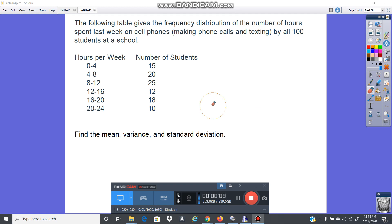The following table gives the frequency distribution of the number of hours spent last week on cell phones by all 100 students at a school. Let's find our data. So two things you have to do before you put this in your calculator.